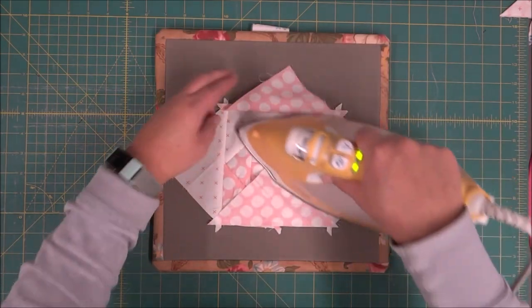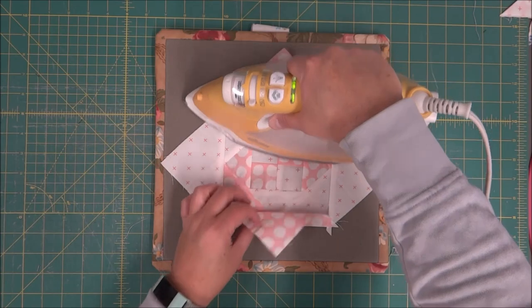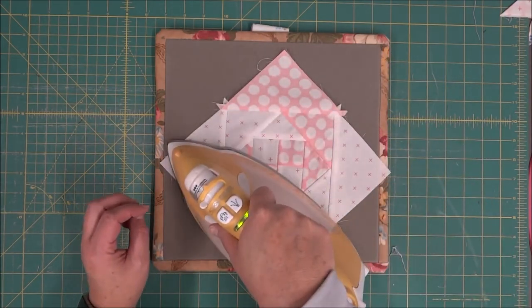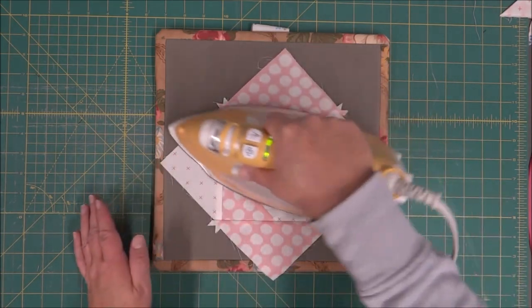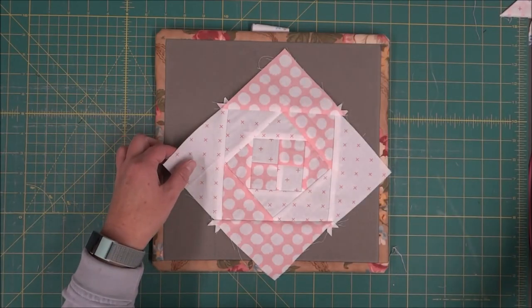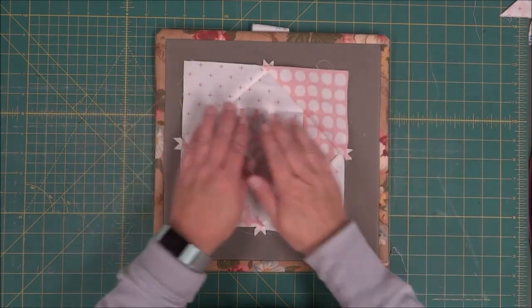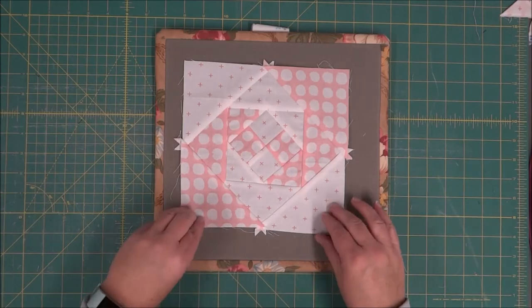Alright, now that we have our last triangle on the outside border, we can go ahead and press the whole block out. What you will want to do is check with the size on the pattern and square this up if you need to.